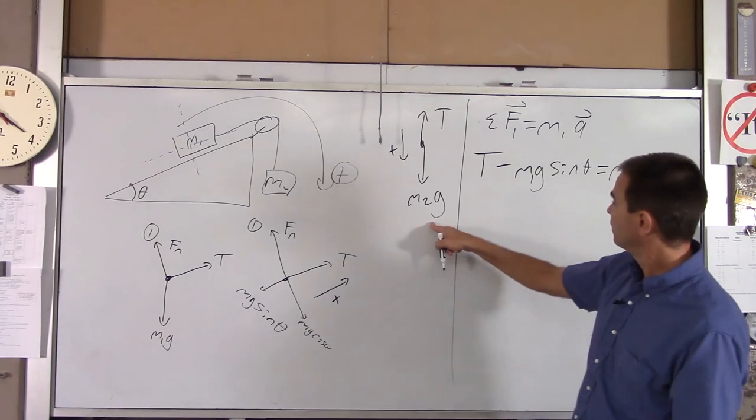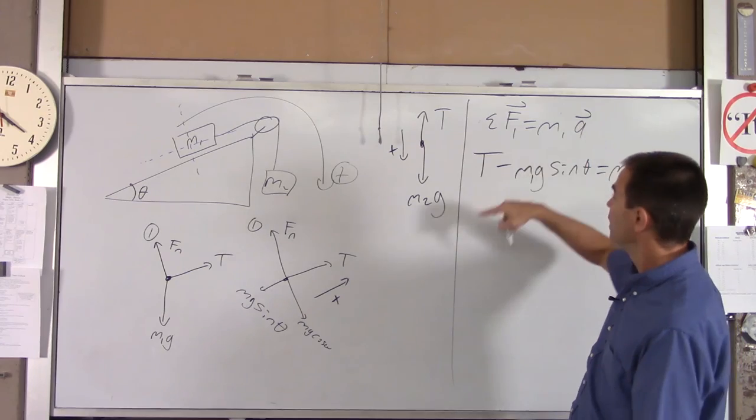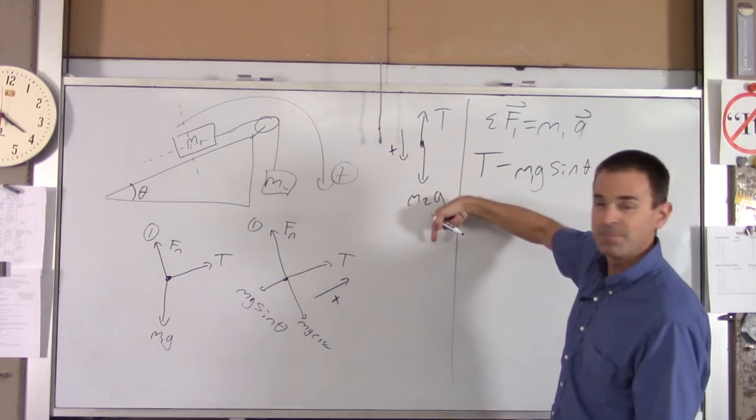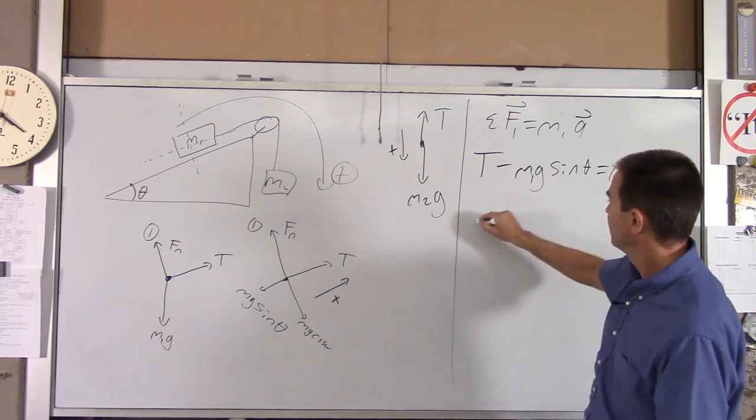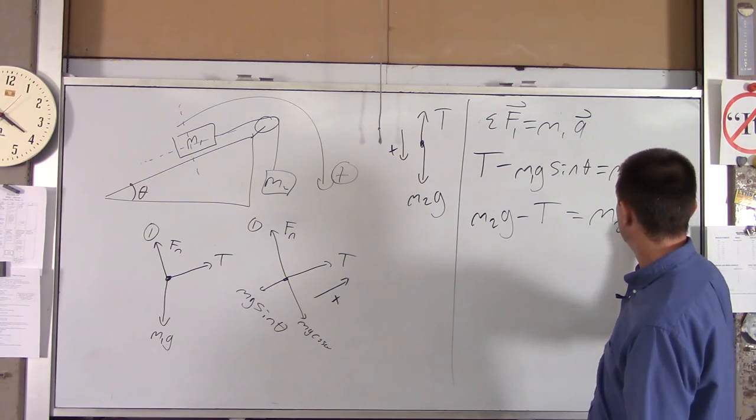For the second block, it's a little easier. I'm not going to rewrite this, but there's a 2 there. There's a 2 there. But here, it's just M2G minus T equals M2A. So we got M2G minus T equals M2A.